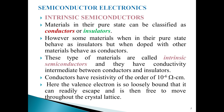Let's look at intrinsic semiconductors. Materials in their pure state can be classified as conductors or insulators. However, some materials when in their pure state behave as insulators but when doped with other materials behave as conductors. These types of materials are called intrinsic semiconductors and they have conductivity intermediate between conductors and insulators.